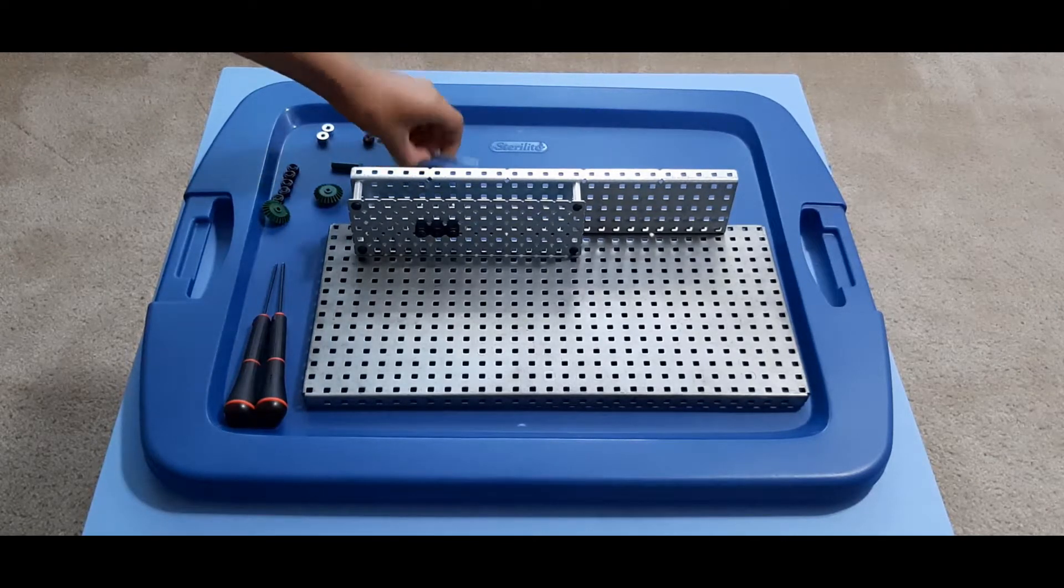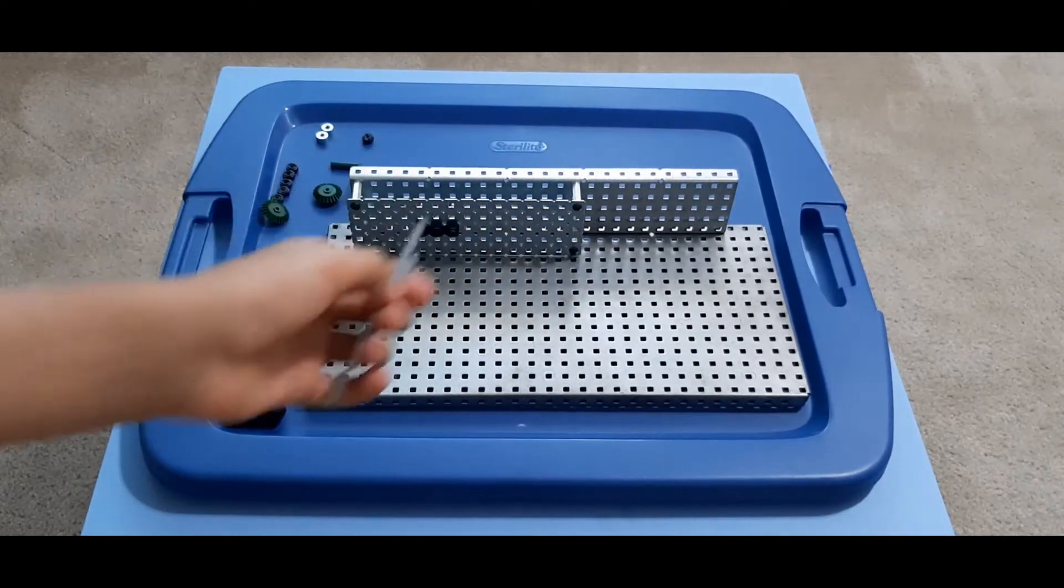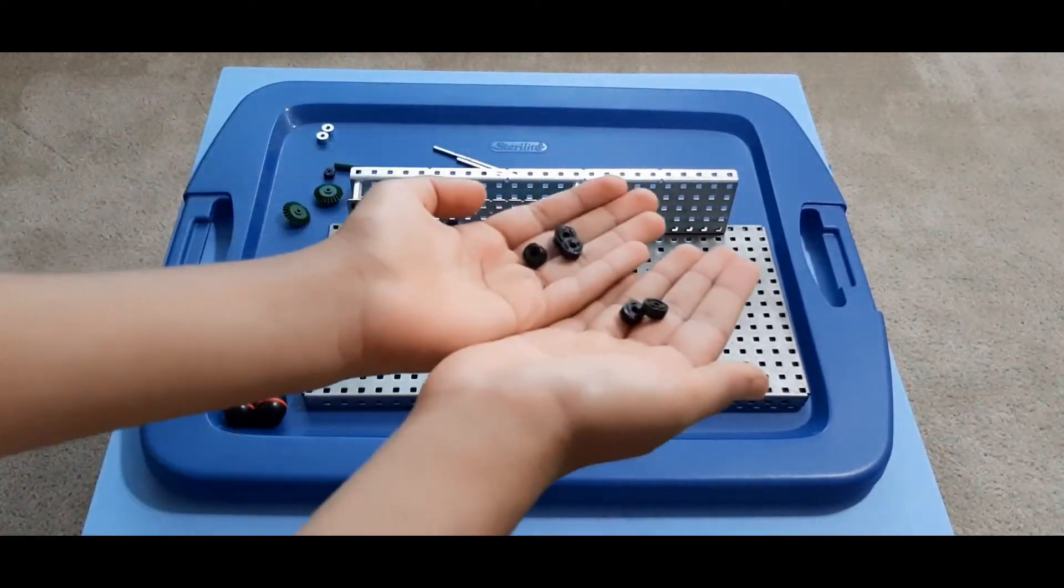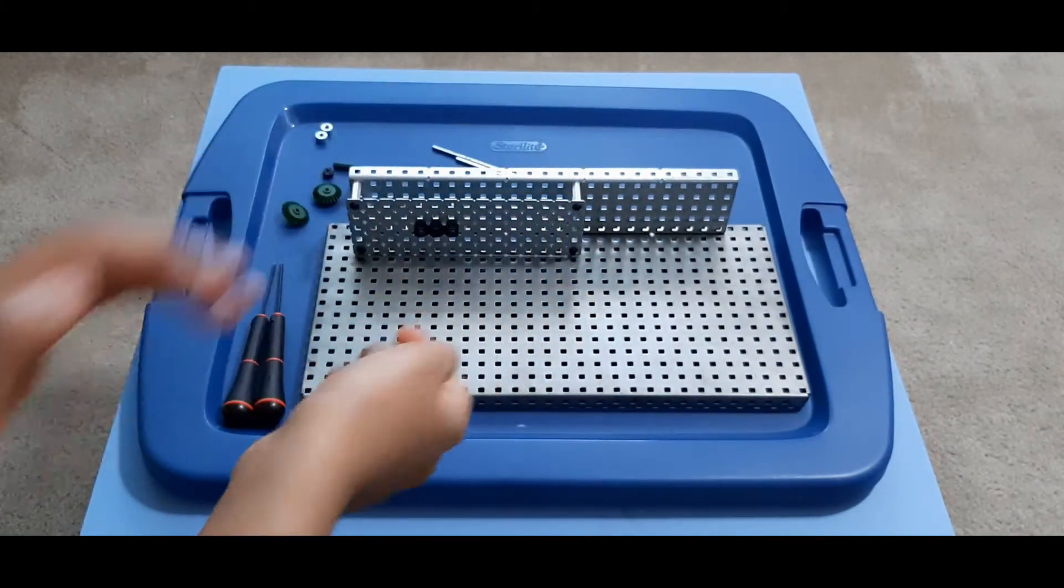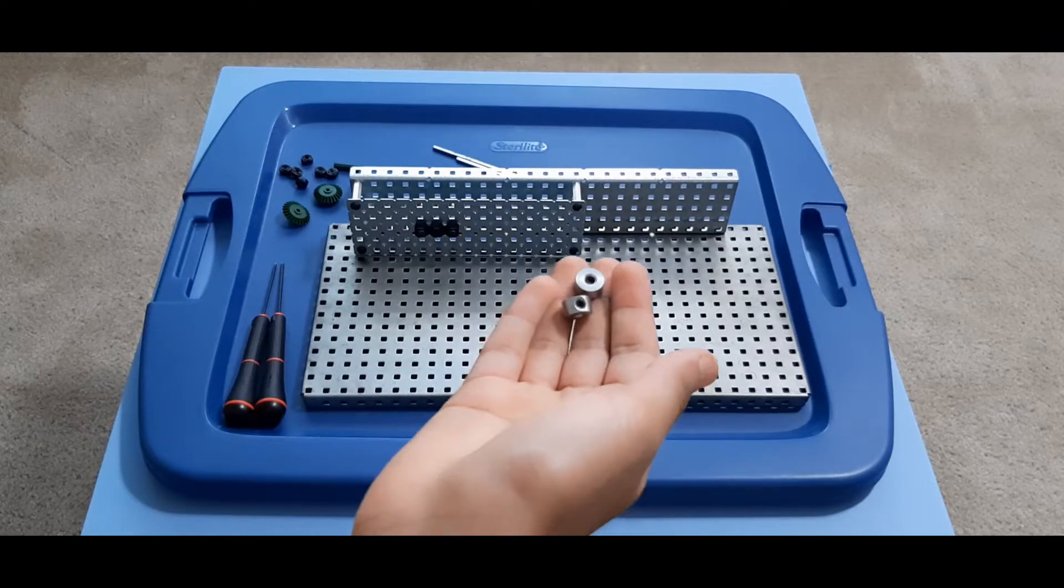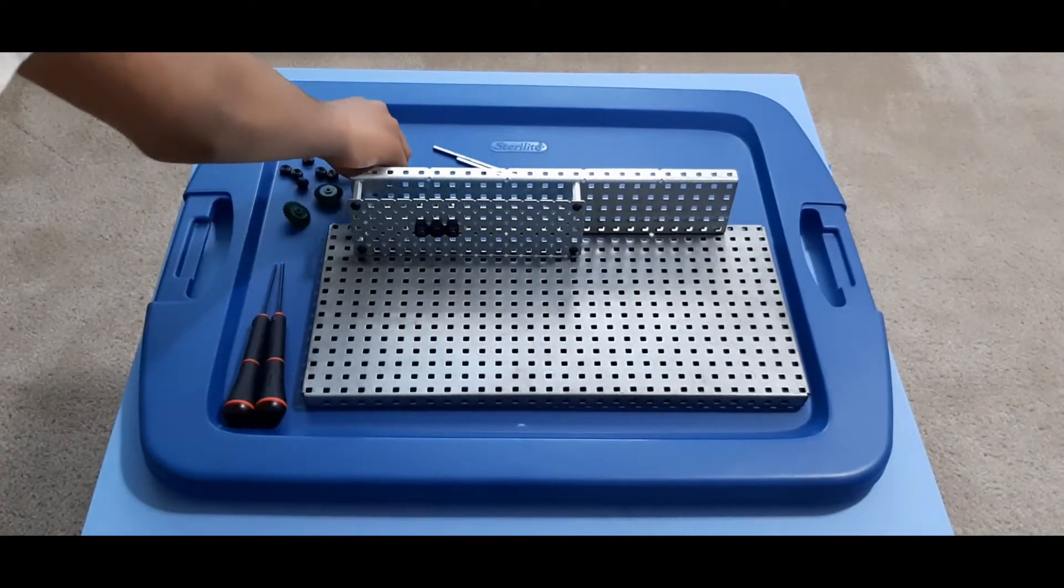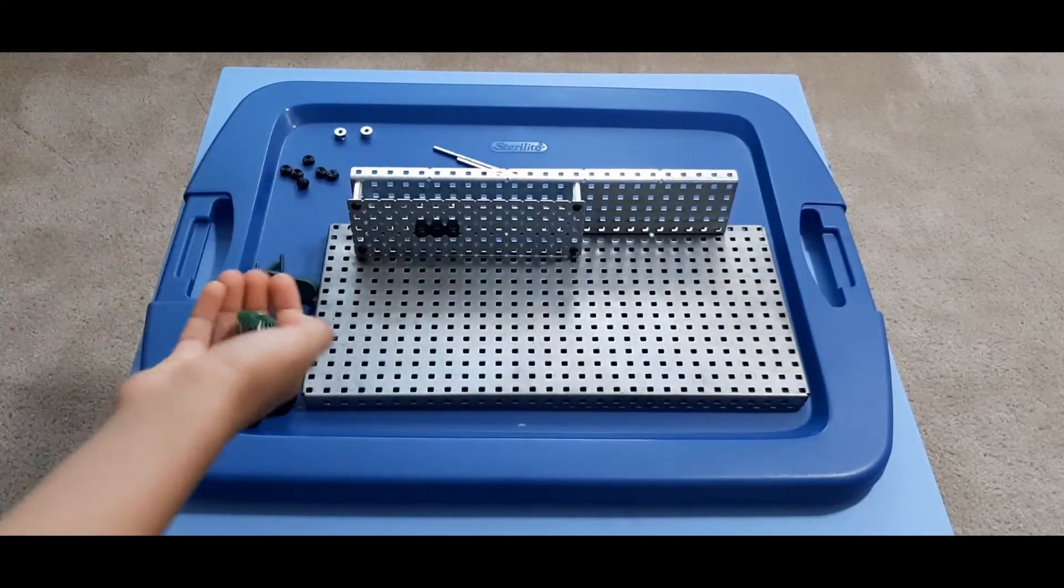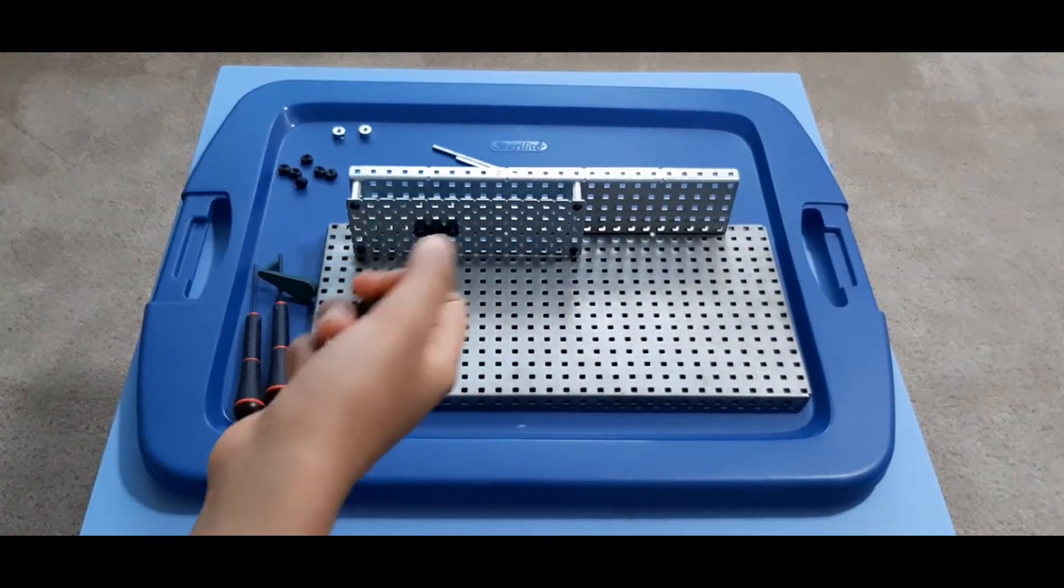Next you will need two axles, a few stoppers, a different kind of tighter silver stoppers, a crank, and two bevel gears.